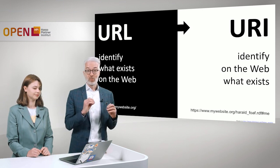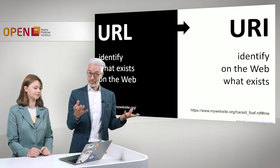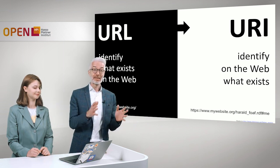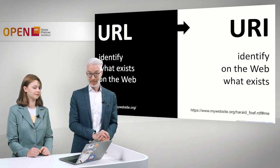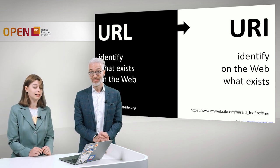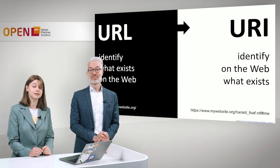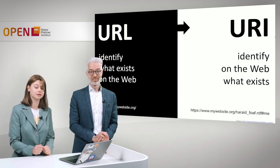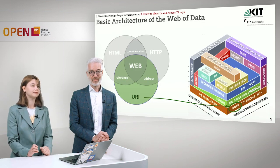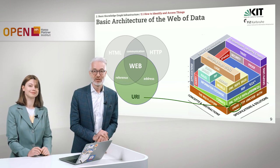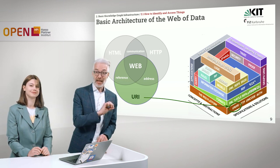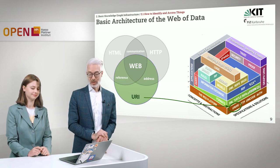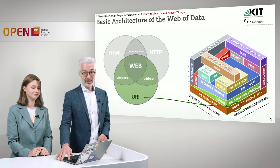However, to differentiate a URL from a URI: a URL identifies what exists on the web, so it's the documents, whereas a URI identifies on the web what exists. They are pretty different. So let's talk about URI, which resides in the lower level — the web platform level of the Semantic Web Technology Stack.